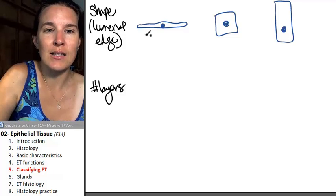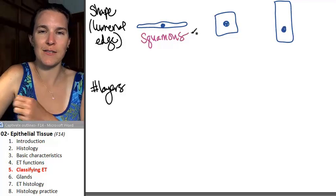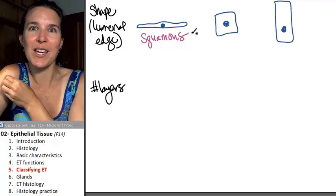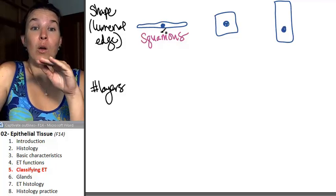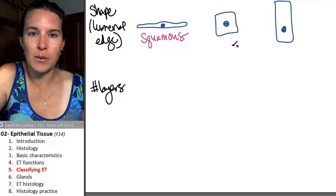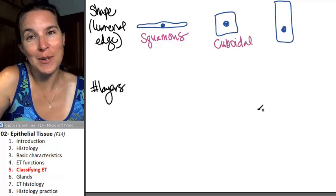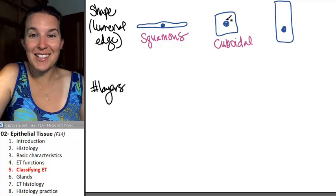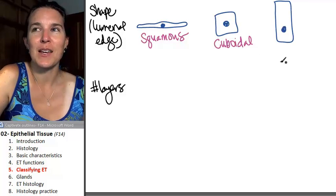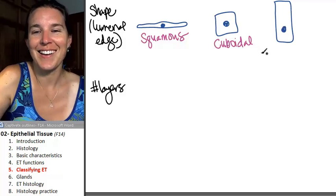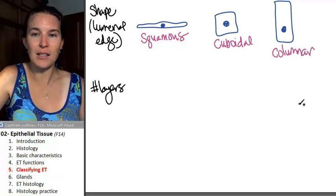Now, this guy is called a squamous cell. Squamous, flat. Like squished. The squamous cell is squished. This would be cuboidal. Done. This would be an example of cuboidal epithelium. Here's squamous epithelium. What do you think this is? It's columnar. Doesn't it look like a column? That's columnar epithelium.